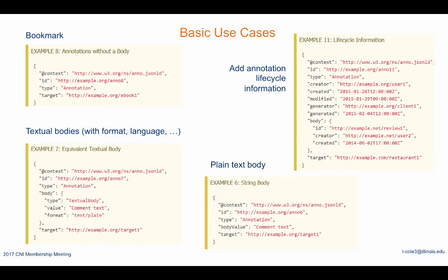Concretely, what kind of things can you do with the Web Annotation Data Model? Simple use cases are relatively straightforward and almost human readable. To be clear, annotations are created and consumed by software, but some simple annotations are easily comprehended at a glance. For example, there's the idea of a bodiless annotation. We were surprised when we began the Open Annotation Collaboration that even among scholars, this is a very common and important use case — just empty bookmarking, like flashing a highlighter or circling something in text.